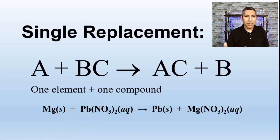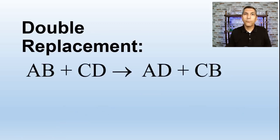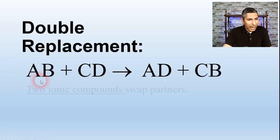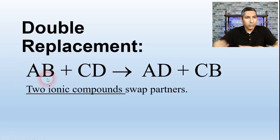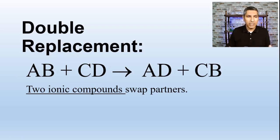The fourth type of chemical reaction is called double replacement — sometimes called double displacement. In a double replacement reaction, the format is: AB plus CD yields AD plus CB. AB and CD are both ionic compounds, and what happens is the ions literally swap partners. A was with B and C was with D; now A gets with D and C gets with B. They've done the old switcheroo and swapped their partners.